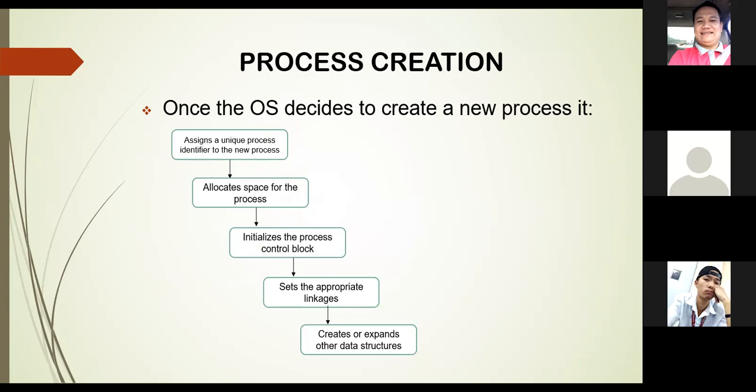Process creation: once the OS decides to create a new process, it assigns a unique process identifier to the new process, allocates space for the process, initializes the process control block, sets the appropriate linkages, and creates or expands other data structures.